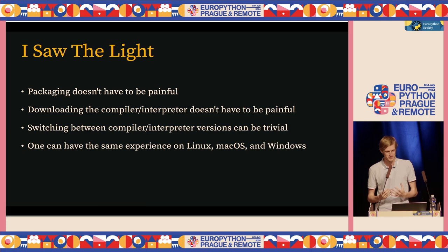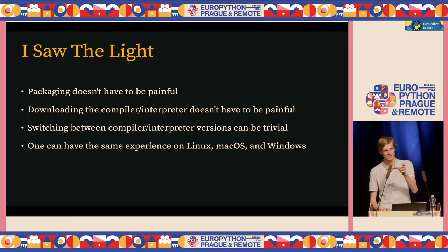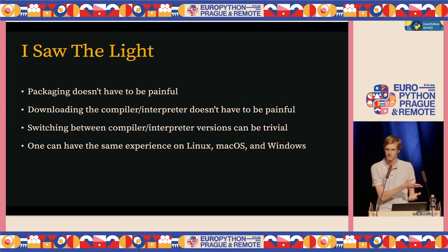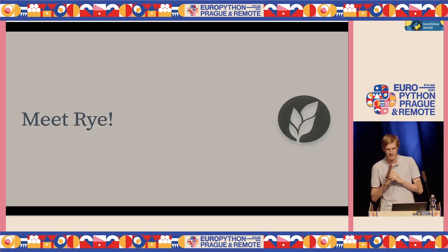Part of my frustration with Python packaging has actually been teaching Python to other people. Even as you write a tutorial, you have to have one line for Windows because the activation script is in 'venv/Scripts/activate', and on Mac and Linux it's 'venv/bin/activate' — all different locations. It's all very different.